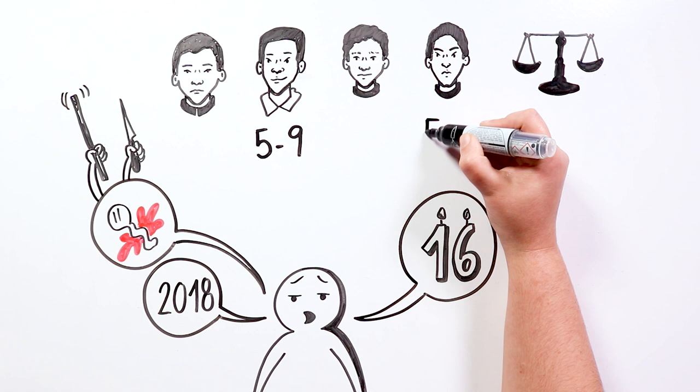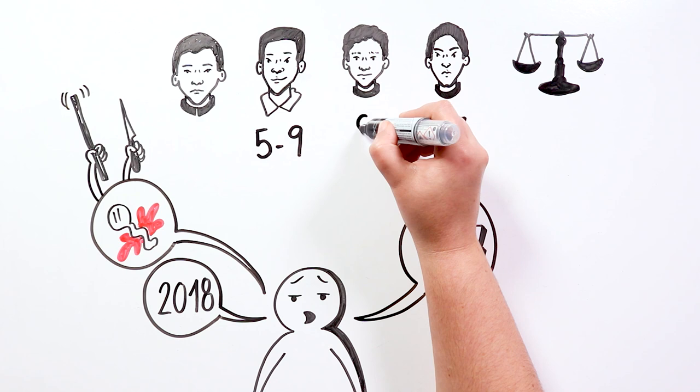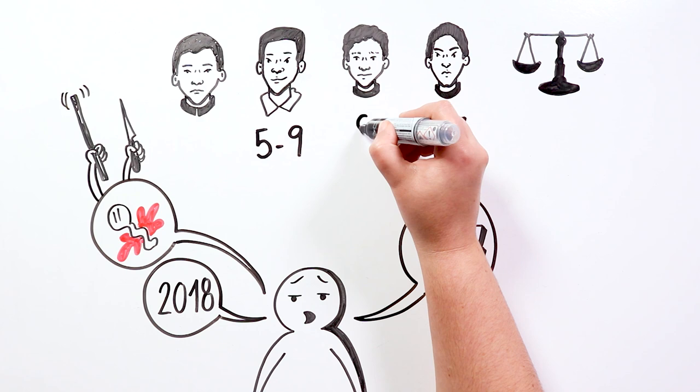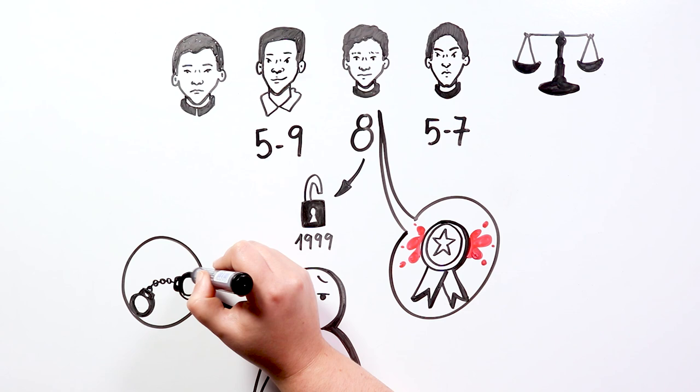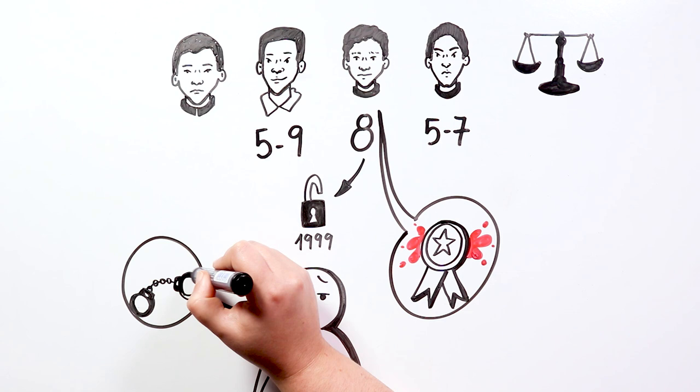Watanabe received a sentence of 5 to 7 years. He was 17 at the time. And Ogura spent 8 years in a juvenile prison before being released in 1999. It is said that Ogura, after his release, bragged about being one of Junko's attackers. He was arrested again for assaulting another man, and was sentenced to 7 more years in prison.